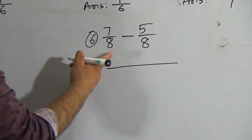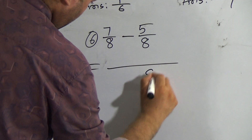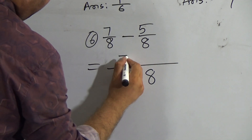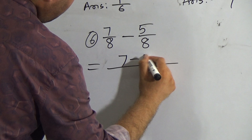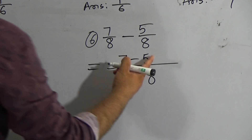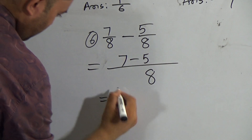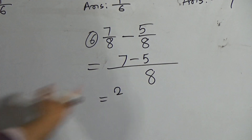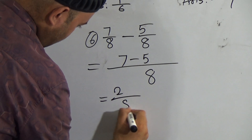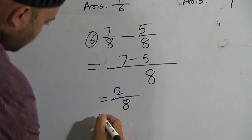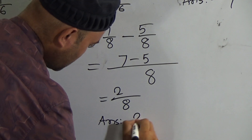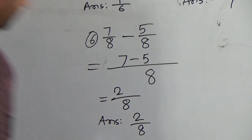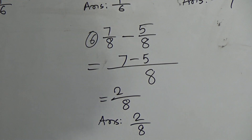Question number 6: Since 8 is the same denominator, write 8 as denominator. The first numerator is 7, put the minus sign, and the second numerator is 5. Subtract 5 from 7 — it will be 2 as numerator and 8 as denominator. So the answer will be 2 out of 8. My dear friends, hope you understood this.